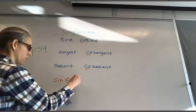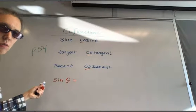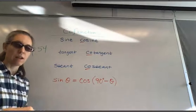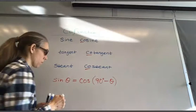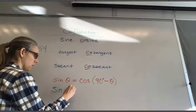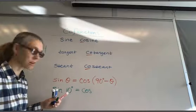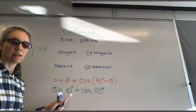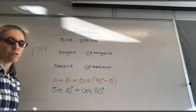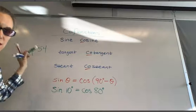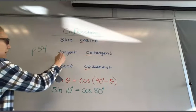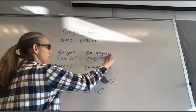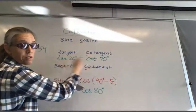Here's how co-functions work: the sine of an angle equals the cosine of the complement of that angle. For example, the sine of 10 degrees equals the cosine of 80 degrees, because 80 is the complement of 10. You can do this with any of these pairs: sine and cosine, tangent and cotangent, secant and cosecant. So the tangent of 20 degrees equals the cotangent of 70 degrees — notice 20 and 70 are complements.